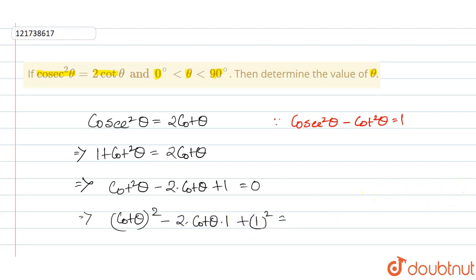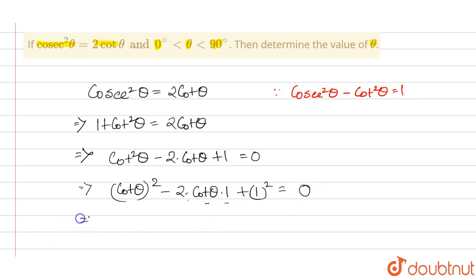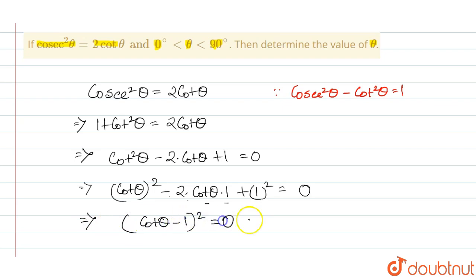Here we use the formula: A square minus 2AB plus B square, which is the A minus B whole square formula. So here we apply it: cot theta minus 1 whole square equals to 0.